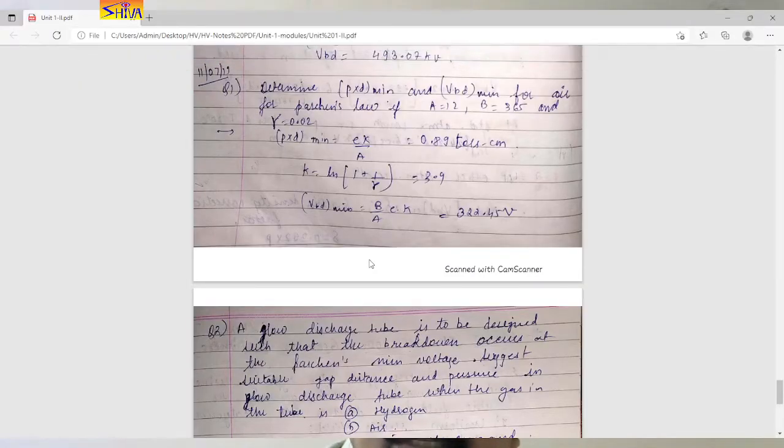So first numerical is this one. Determine p into d minimum and minimum breakdown voltage for air. For Paustian's law, if value of a is 12, b is 365 and gamma is 0.02. This is for air.